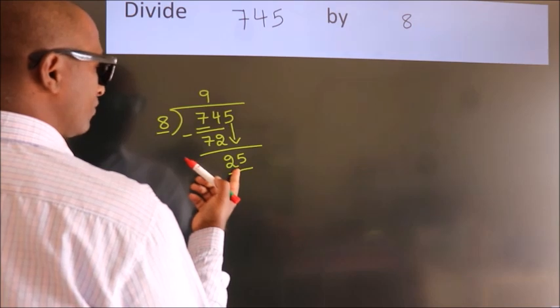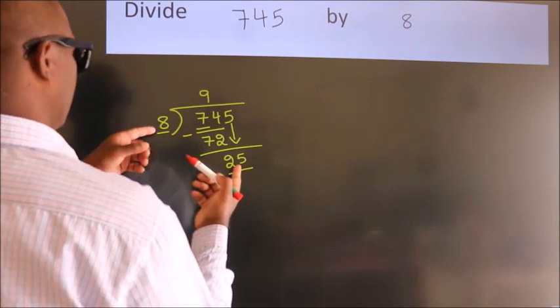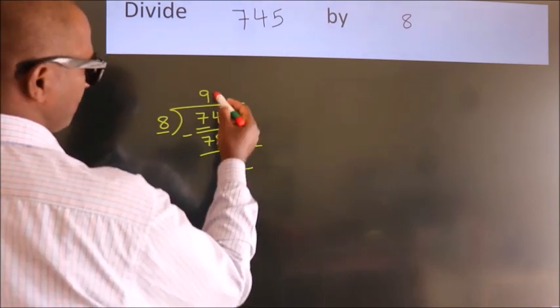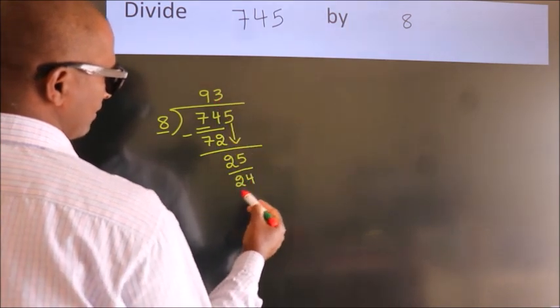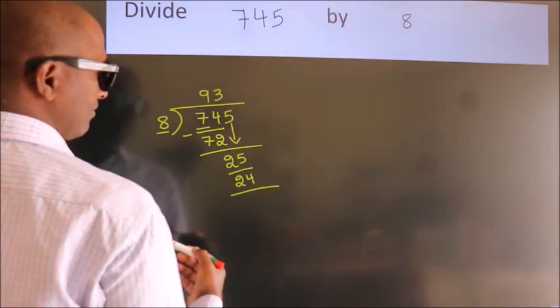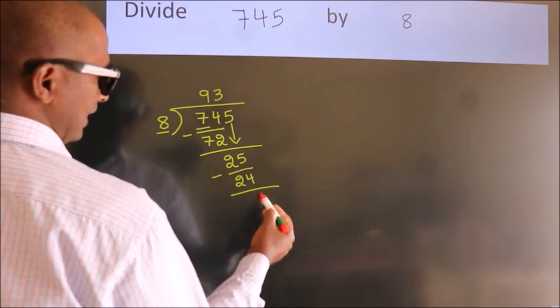A number close to 25 in 8 table is 8 threes, 24. Now, we subtract. We get 1.